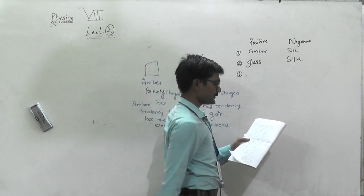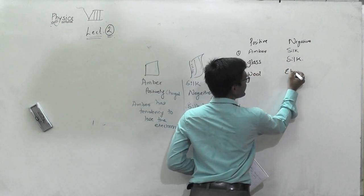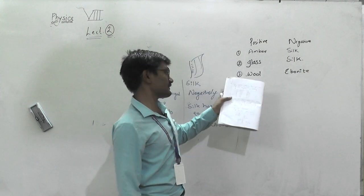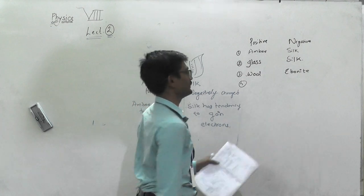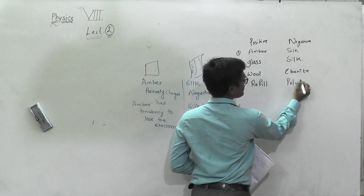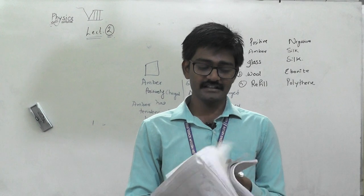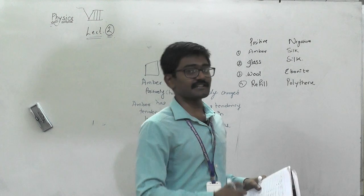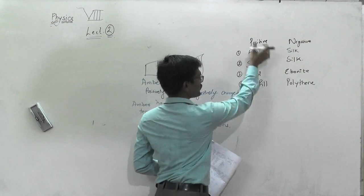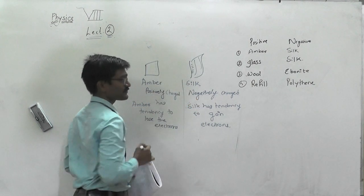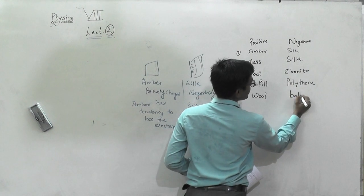Similarly, we have wool rubbed upon ebonite. Ebonite is a piece of material — if rubbed with wool, wool acquires a positive charge but ebonite gets negative. We also have refill with polythene — plastic. The refill acquires a positive charge. And wool with balloon — wool acquires positive charge and balloon acquires negative charge.